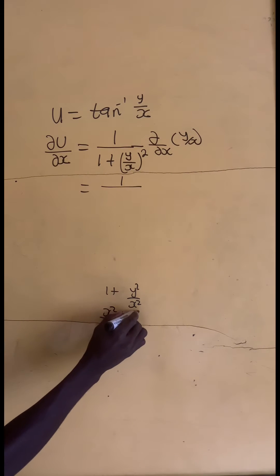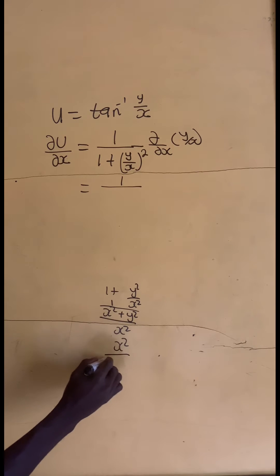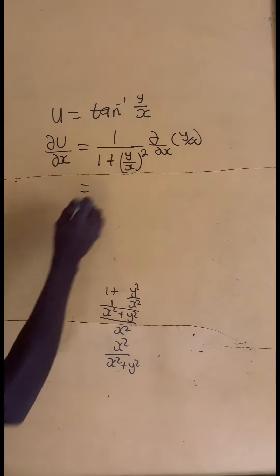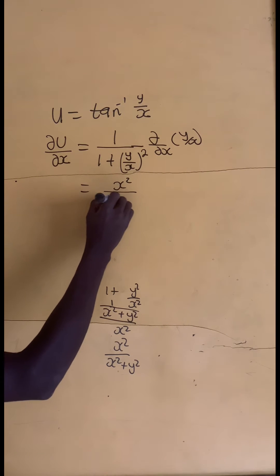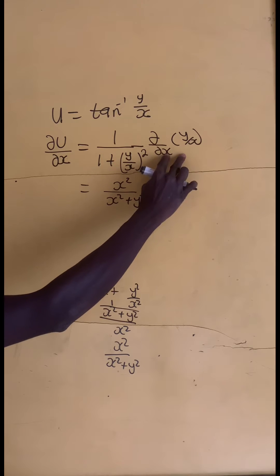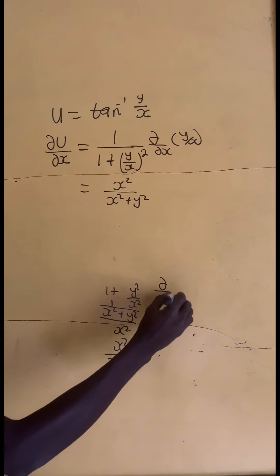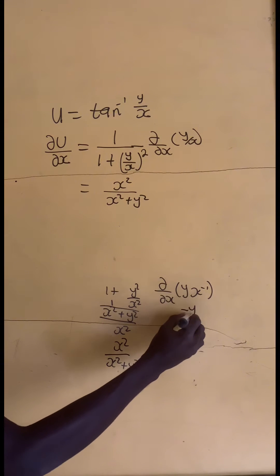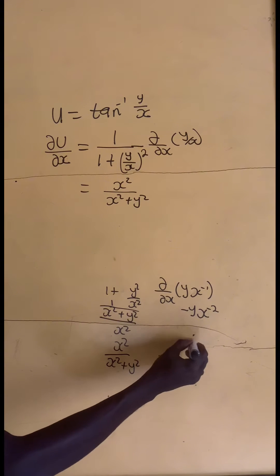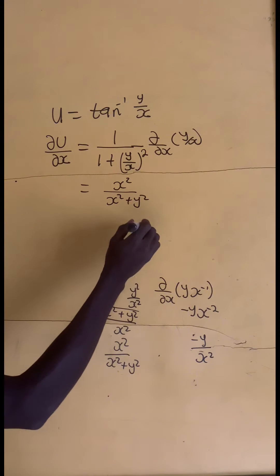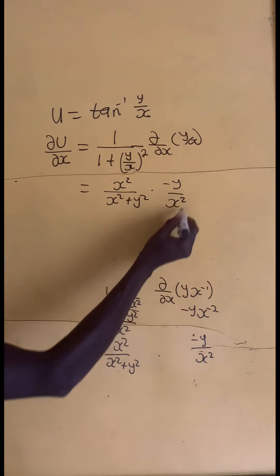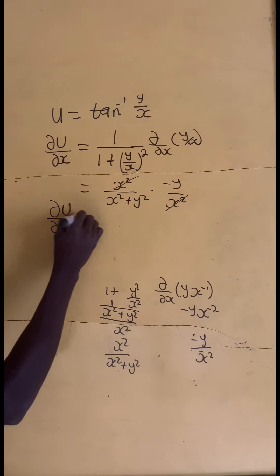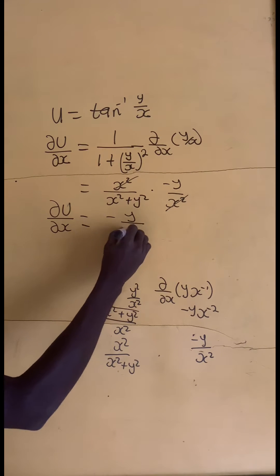So if I divide by 1, the whole thing turns upside down to become x squared divided by x squared plus y squared. We rewrite the inner term as del x of y times x to the power negative 1. If we differentiate this partially with respect to x, we get negative y times x to the power negative 2, which is negative y divided by x squared. Replacing and cancelling x squared gives partial derivative of u with respect to x equals negative y divided by x squared plus y squared.